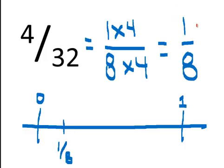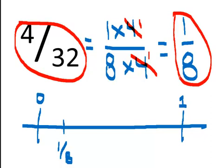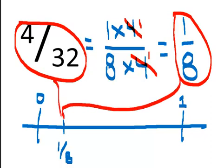Let's see how you did. 4 over 32 — 4 thirty-seconds. We can multiply 1 times 4, that gives us 4, and 8 times 4, that gives us 32. The 4s cancel each other out, becoming the number 1, and so 1 times 1 is 1, and 8 times 1 is 8. So 4 thirty-seconds and 1 eighth are the same amount of stuff, and they both live at the same place on the number line.